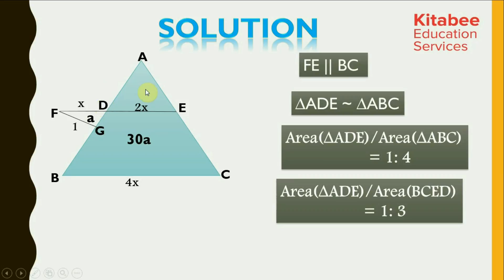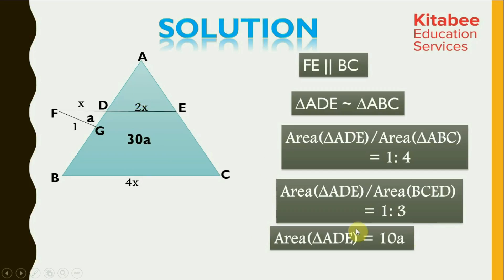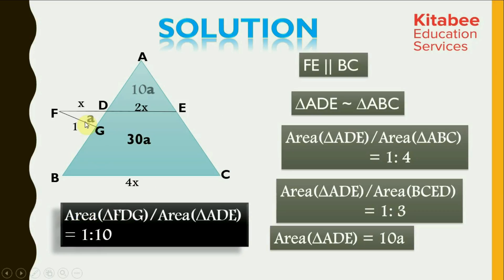Area of triangle ADE to area of trapezium BCED is equal to 1 is to 3. This part is 30A, so triangle ADE would be equal to 10A, that is one third the area of the trapezium. We have calculated area of triangle ADE as 10A, and we know area of triangle FDG is A. Thus, area of triangle FDG to area of triangle ADE comes out to be equal to 1 is to 10.